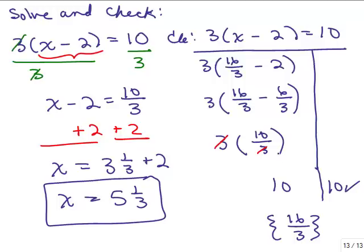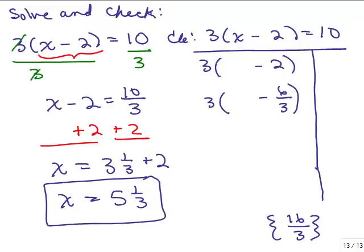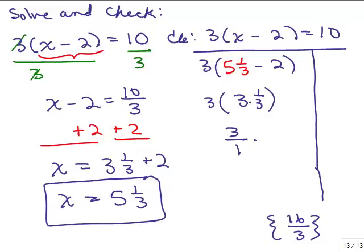When you check it, it looks exactly the same. Instead of putting in 16 thirds, you could put in 5 and 1 third. So let's see what that would look like: we have 3 times the quantity 5 and 1 third minus 2. Inside the parentheses, 5 and 1 third minus 2 is 3 and 1 third. Then 3 times 3 and 1 third — think of that as 3 over 1 times 10 thirds — equals 10. Still using the order of operations, just a couple of ways of solving and checking.